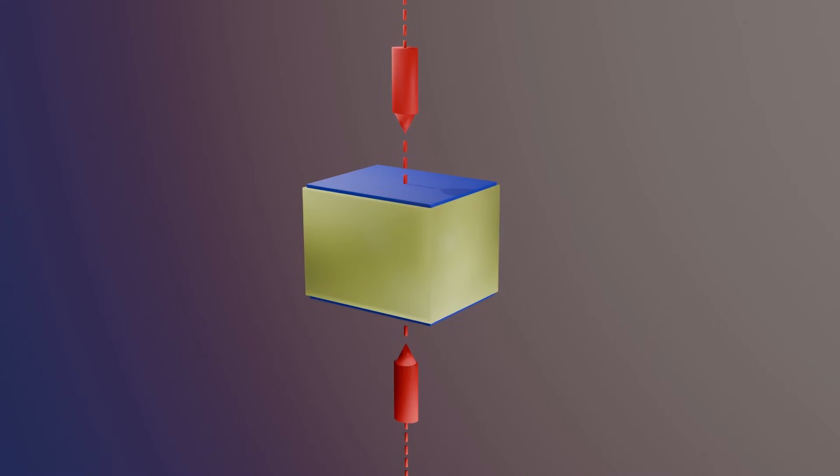Let's take a simple cube as an example. When we apply a compressive load on this cube, it shortens in the direction of the applied force. At the same time, it expands in the other two directions.